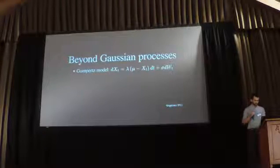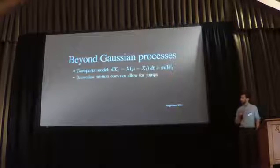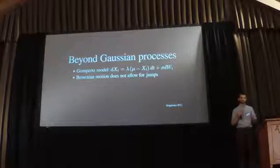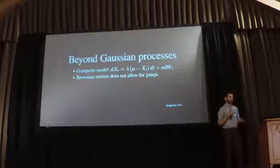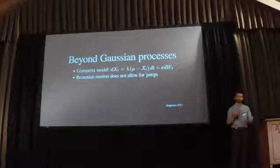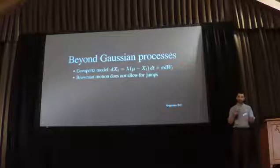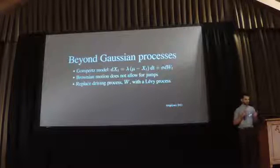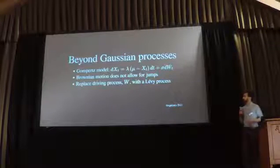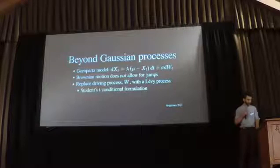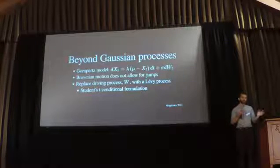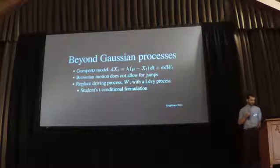This Gaussian population model doesn't work that well for microbiome data because the noise tends to be heavy-tailed — there are large sudden shifts in the population. This may be due to cumulative advantage of microbes or external effects like diet. So we want to replace the Brownian motion driving process with a more general Lévy process, chosen so that rather than normally distributed marginals we get heavy-tailed Student-T distributed marginals.